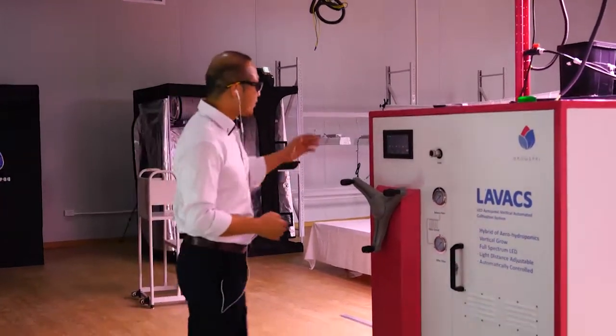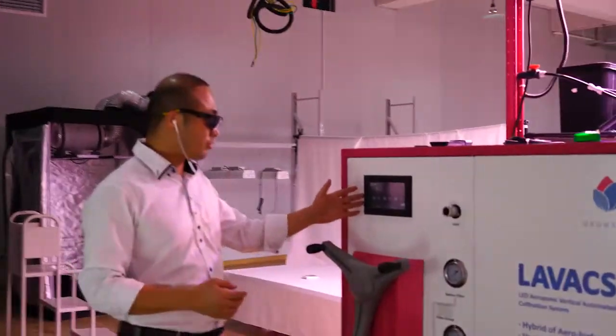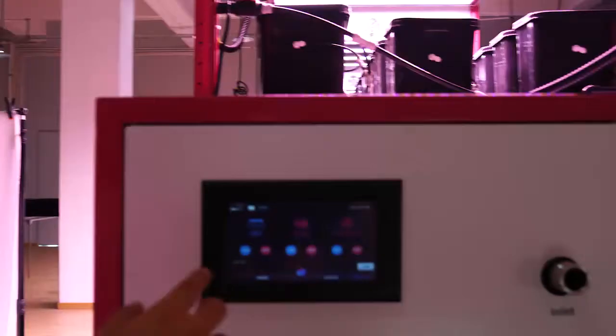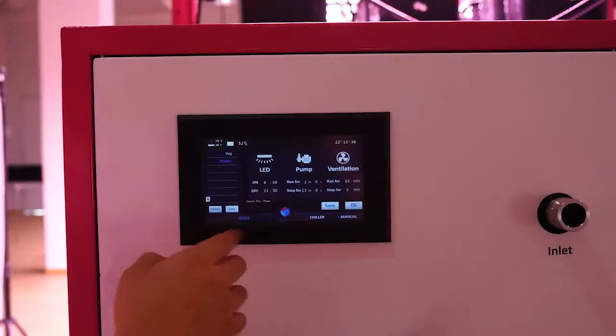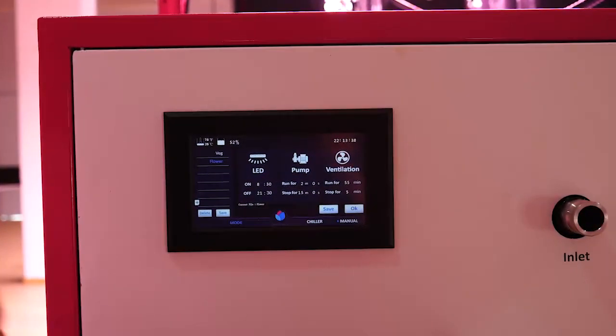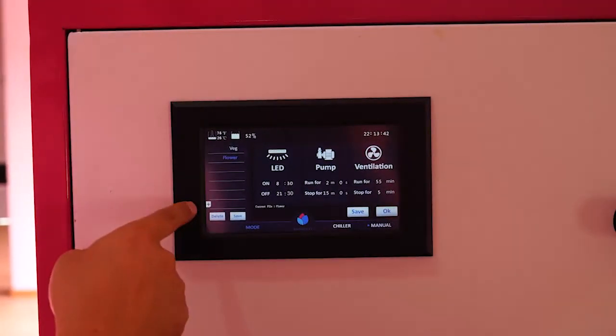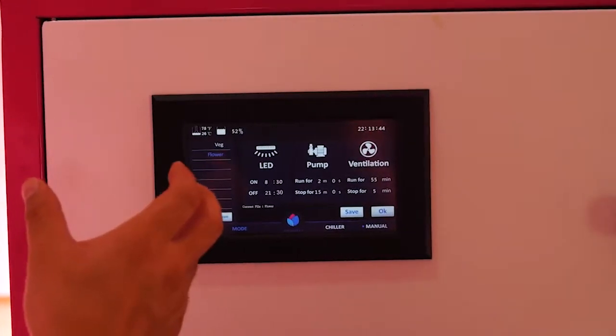You can see there is a 7-inch touchscreen in the vertigator. Now let's see you have mold. We have default tube mold, veg and flower, and you can use your own mold also.